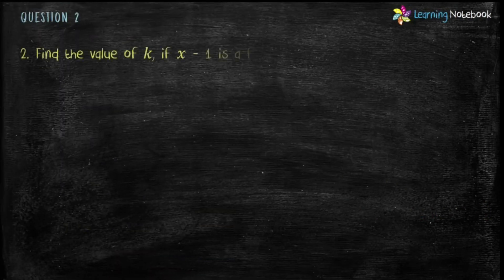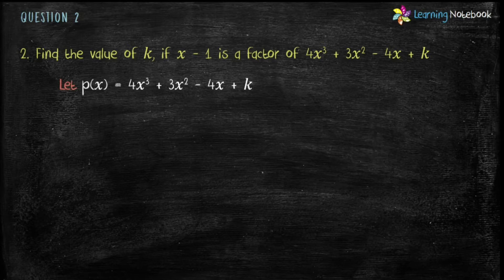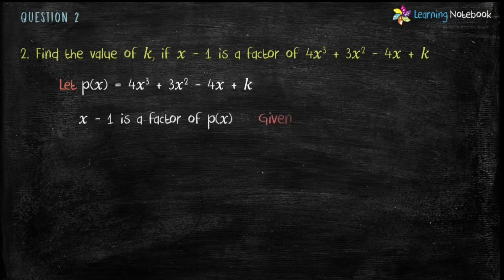Students, let's do one more question to understand Factor Theorem. Find the value of K if x minus 1 is a factor of 4x³ plus 3x² minus 4x plus K. Let P(x) equals 4x³ plus 3x² minus 4x plus K. We are given x minus 1 is a factor of P(x), which implies x minus 1 equals 0, therefore x equals 1.